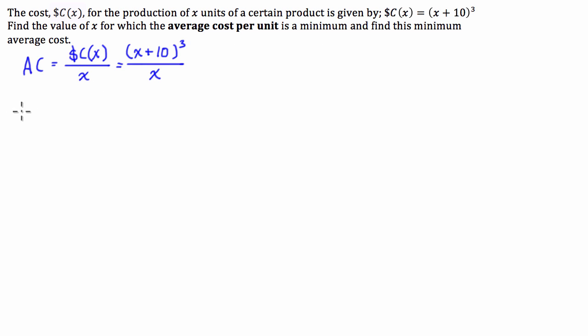So what we're going to do, I might just change colors, keep it separate. So we're going to have to differentiate the average cost function with respect to x. Now I'm going to use the quotient rule just so you guys are aware of what the hell I'm doing.